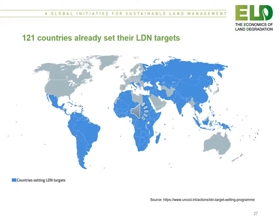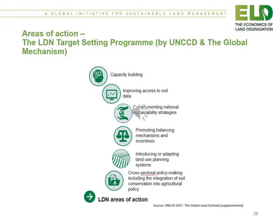This slide shows the 121 countries that have already set their voluntary LDN targets. The LDN target setting program includes six areas of action: one, capacity building; two, improving access to soil data; three, complementing national and sustainability strategies; four, promoting balancing mechanisms and incentives; five, introducing or adapting land use planning systems; and six, cross-sectoral policy making, including the integration of soil conservation into agricultural policy.